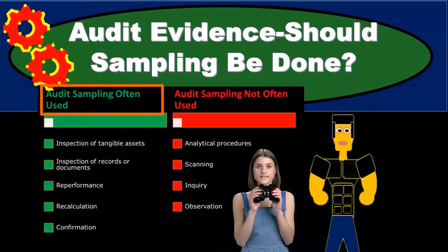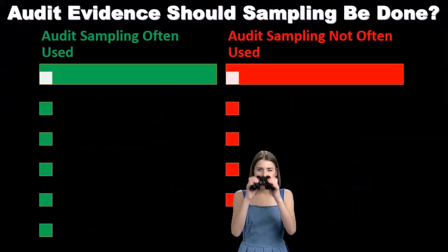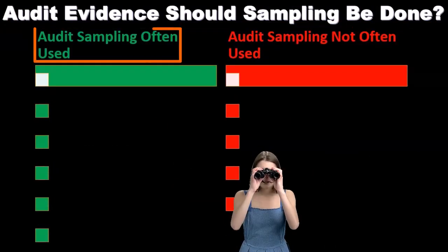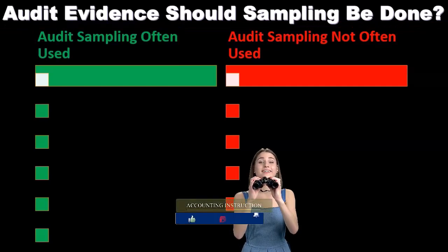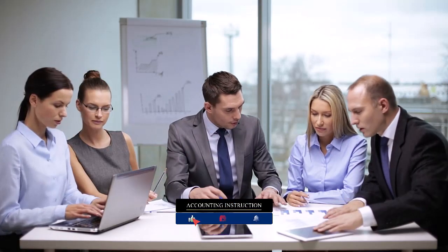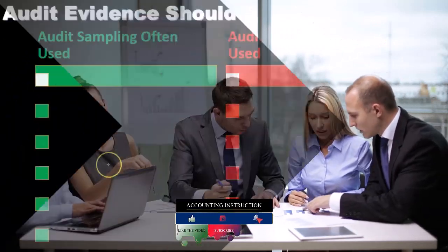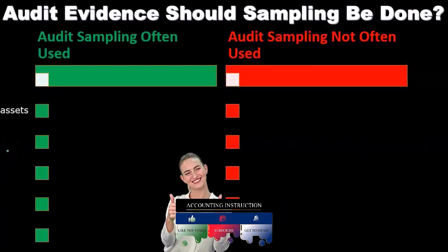We'll discuss when sampling is used and when it may not be used, and provide some examples. First we'll take a look at some situations where audit sampling is often used — circumstances where sampling will typically be used — and then we'll take a look at circumstances where audit sampling is not often used. So when would we use sampling methods?